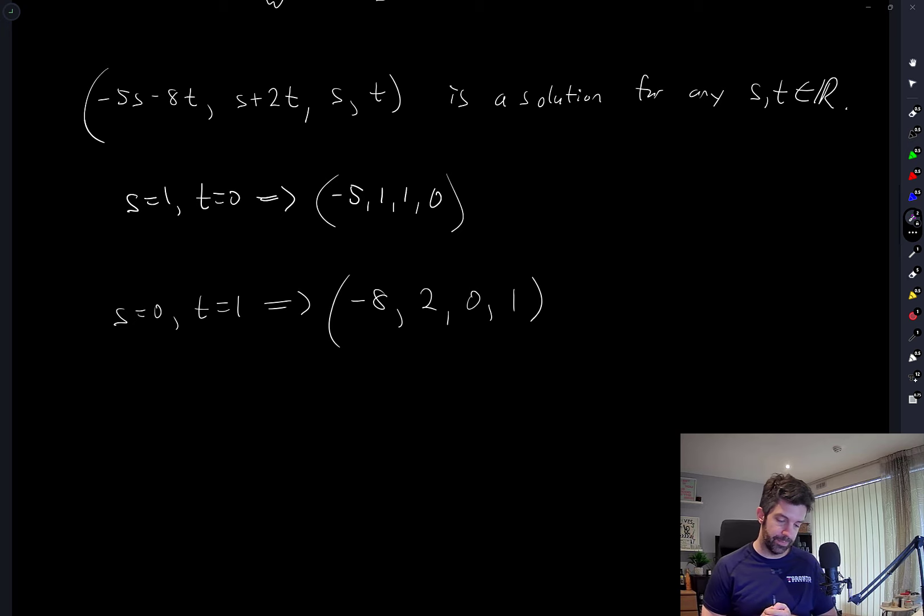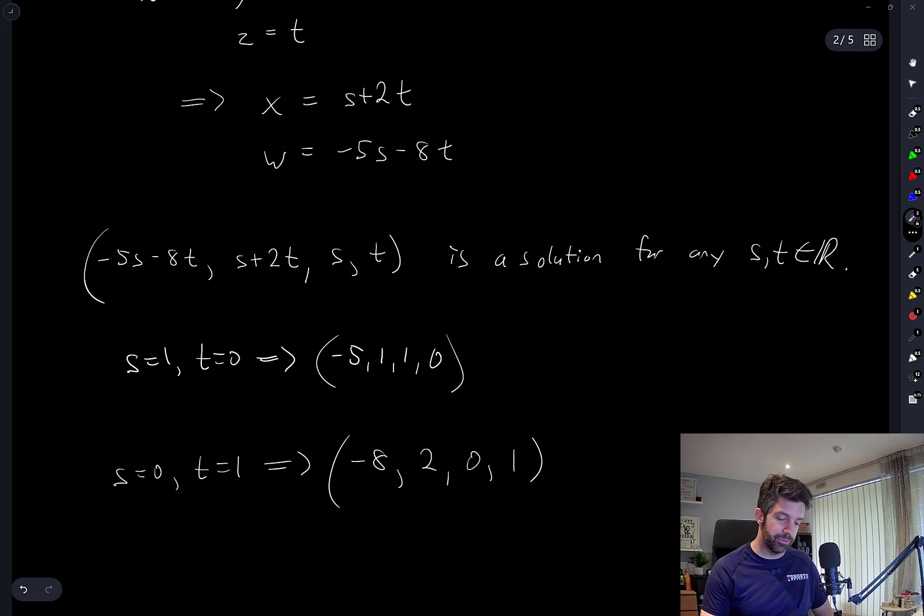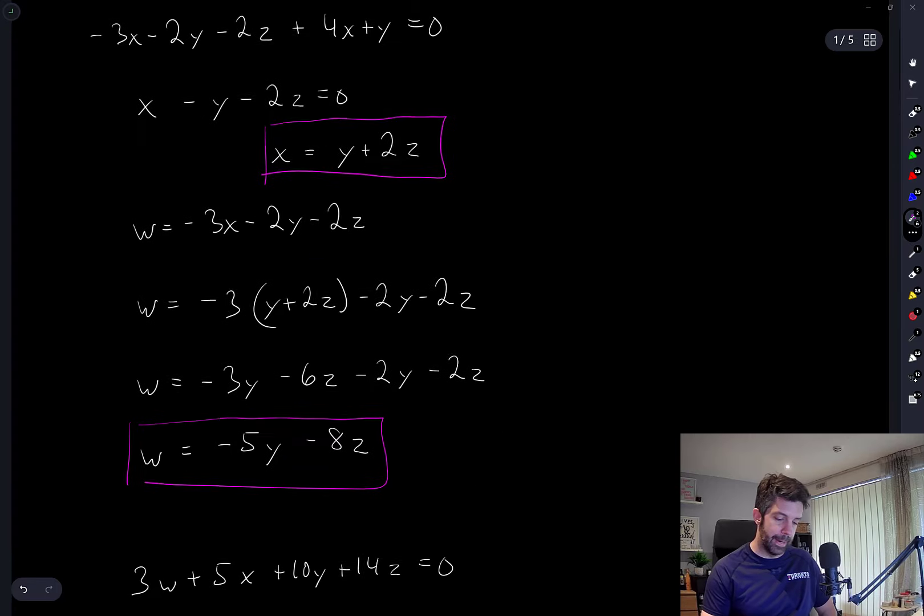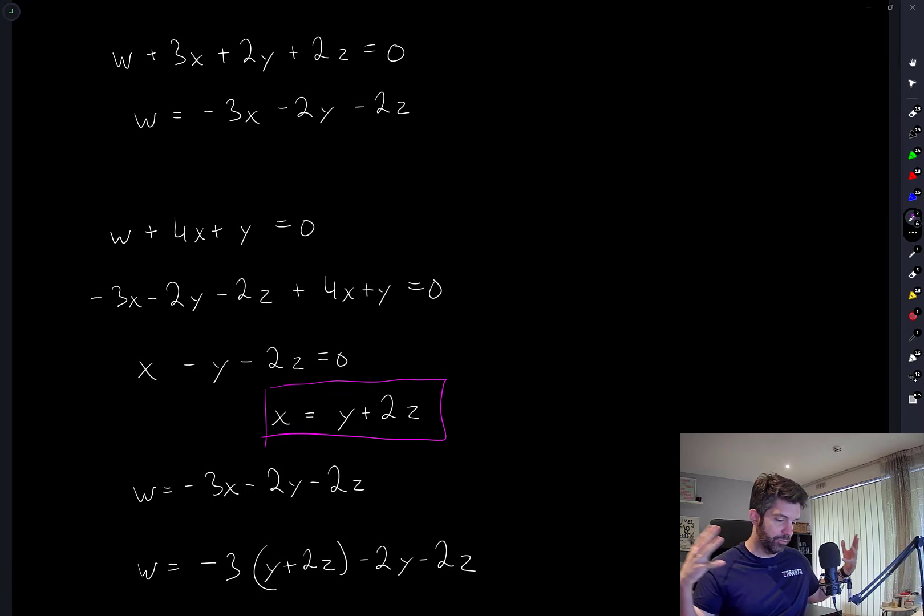Yeah, so this is one of a few different ways of solving a linear system like this. I don't know if this has a specific name, back substitution maybe, but just use every equation, start with the first equation and use it to solve for one of the variables in terms of the other.